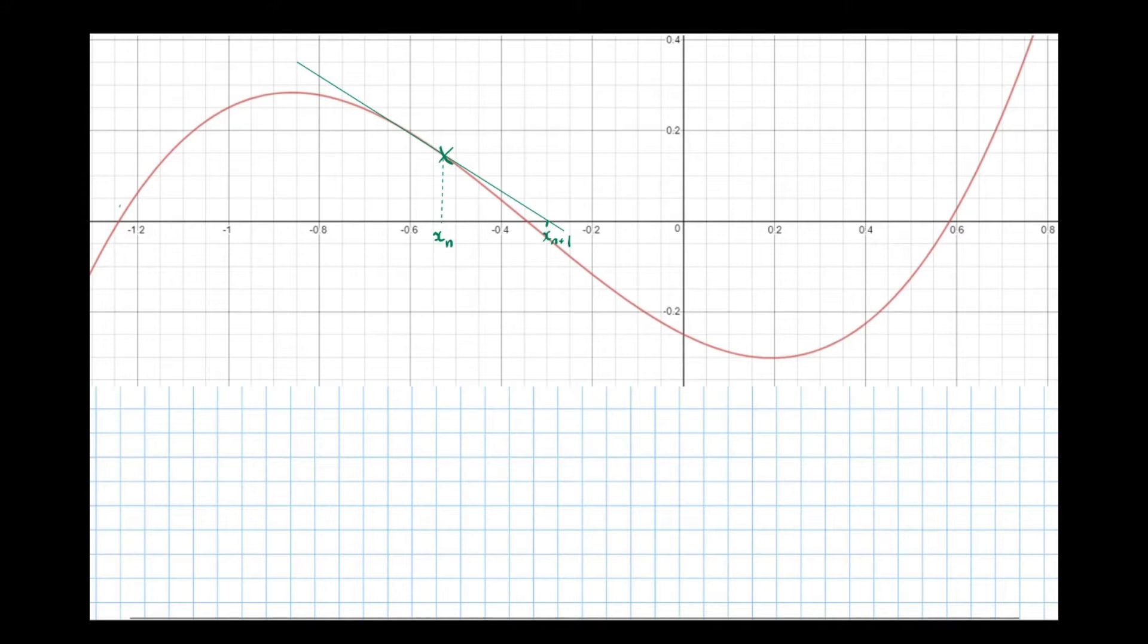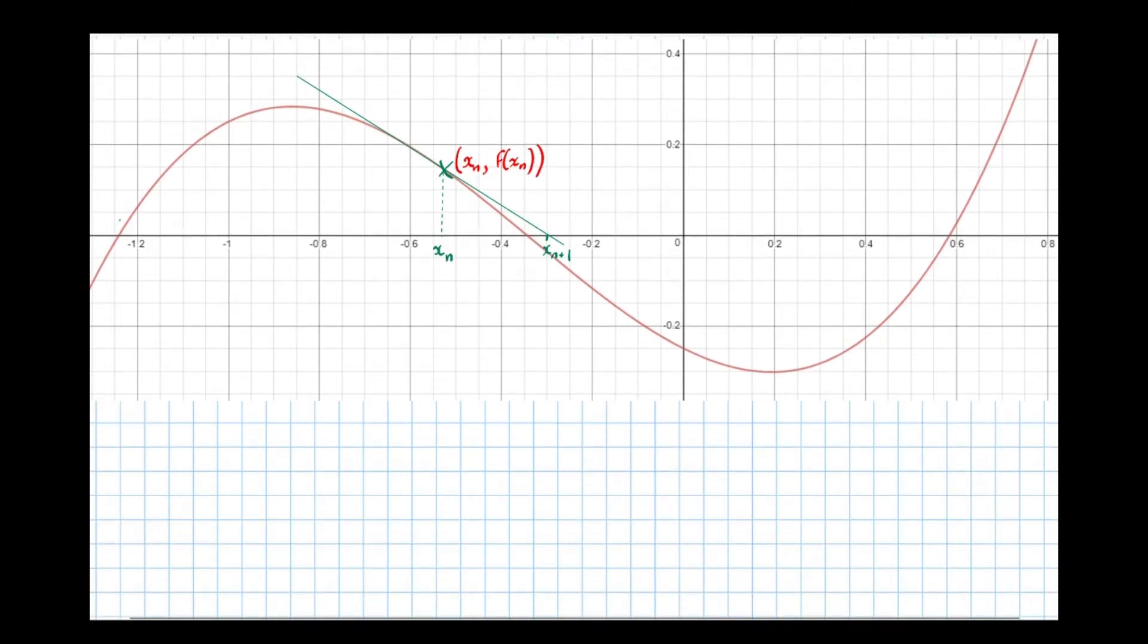Let's think about, first of all, the equation of the tangent. We've got a point on the curve xn and f of xn, where in this case, f of x was our equation. f of x equals x cubed plus x squared minus 1 half x minus 1 quarter. We're going to find the equation of this tangent now.